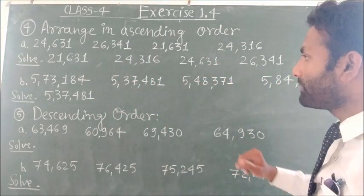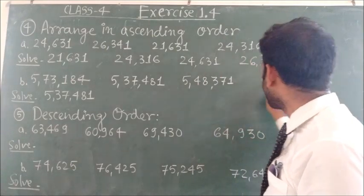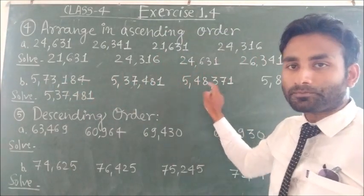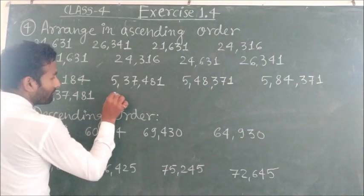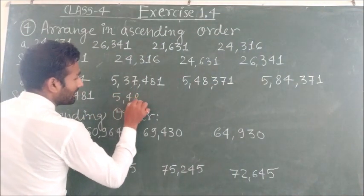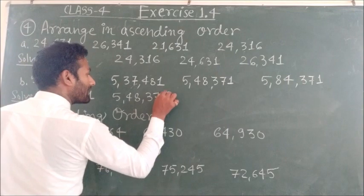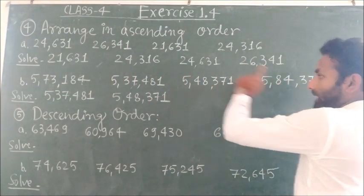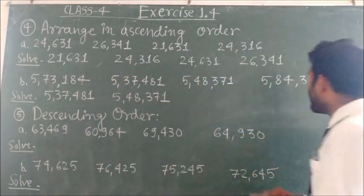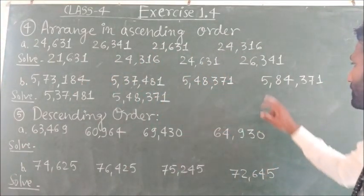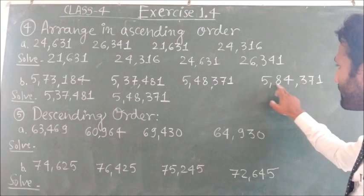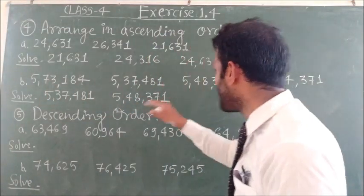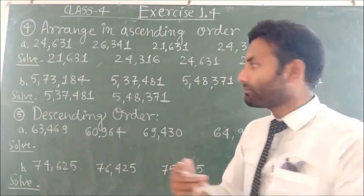Next, comparing the remaining numbers with 3 as the smallest tens digit: between 4, 8, and 7, we write 5,48,371. Next smallest is 5,73,184, and the last number is 5,84,371.